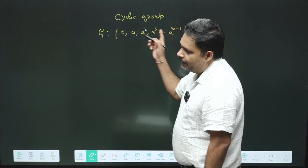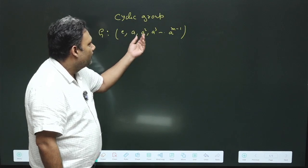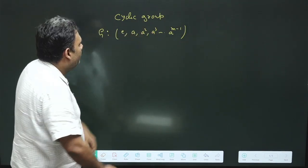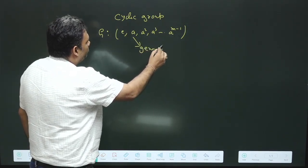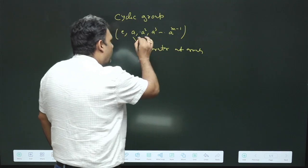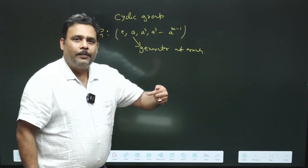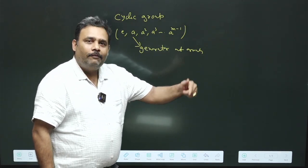If we can represent a group like this, that means the other elements can be generated through one particular element. So here A is a generator of the group, because other elements can be easily generated through A. A operation A will give you A square, A operation A square will give you A cube.